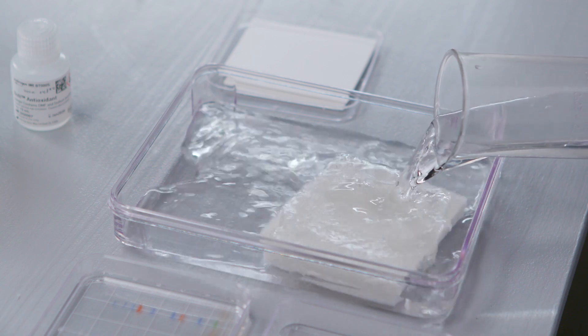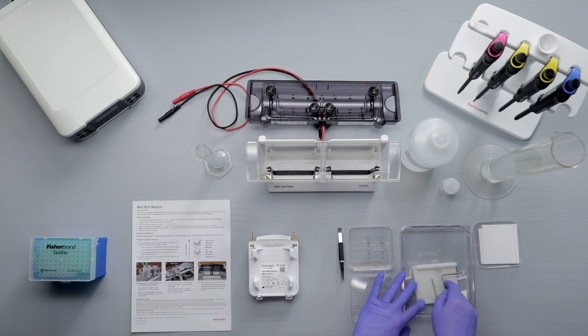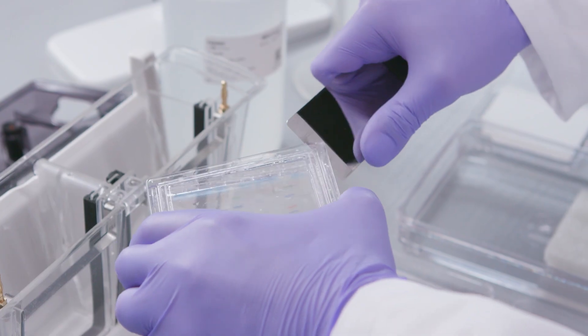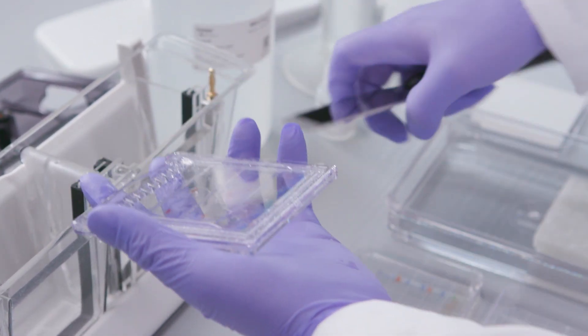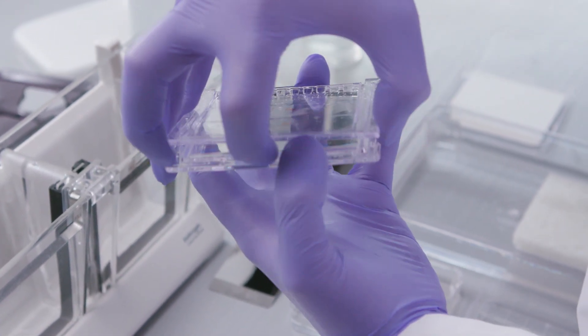Soak two sponge pads in transfer buffer and squeeze the pads to remove air bubbles. Open the gel cassette using a gel knife and carefully remove the wells and the foot of the gel so that the entire gel is of equal thickness.